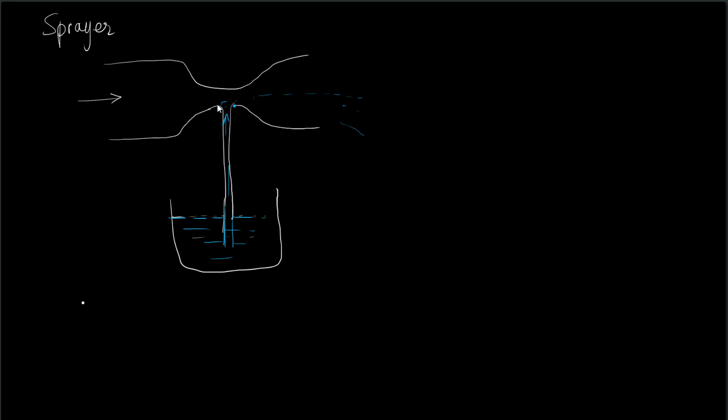When it reaches this section there is atomization of the drop because of the shearing action of the flow, and there is a spray in this particular section. This is a very simplistic view of the spraying apparatus. Now the question is, what is the value of the exit velocity that causes this spray?